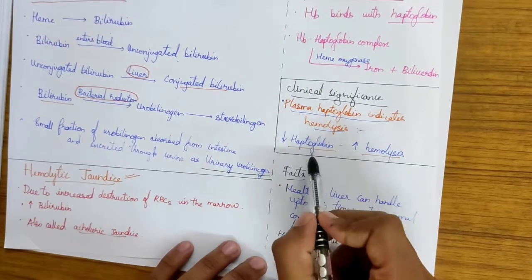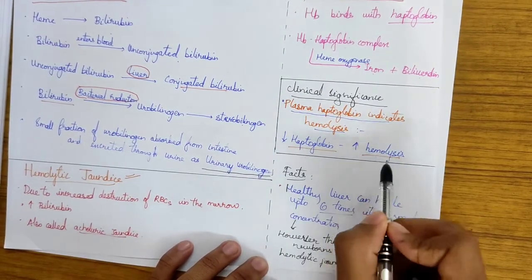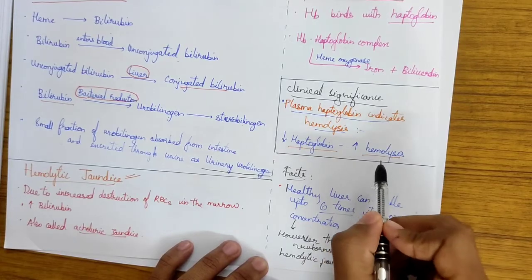This is a clinical significance. When there is decrease of haptoglobin in the blood, it signifies that an increase of hemolysis has occurred in the body.